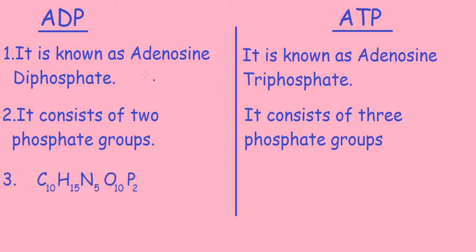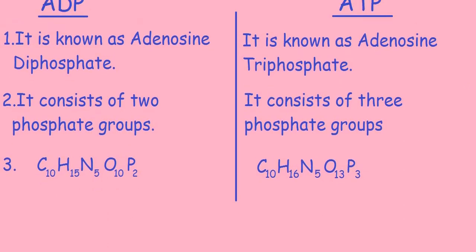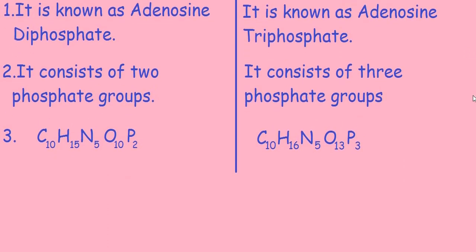The third point covers chemical formulas. The chemical formula of ADP is C10 H15 N5 O10 P2, and the chemical formula of ATP is C10 H16 N5 O13 P3.